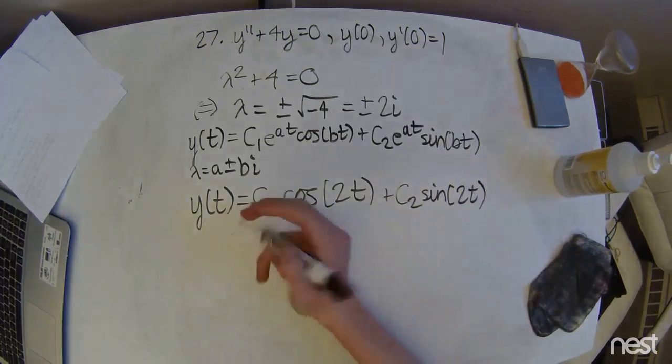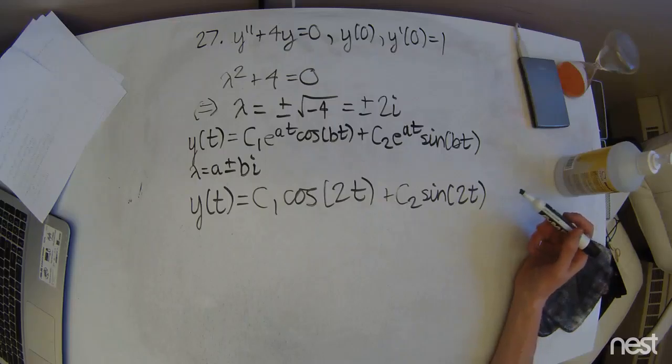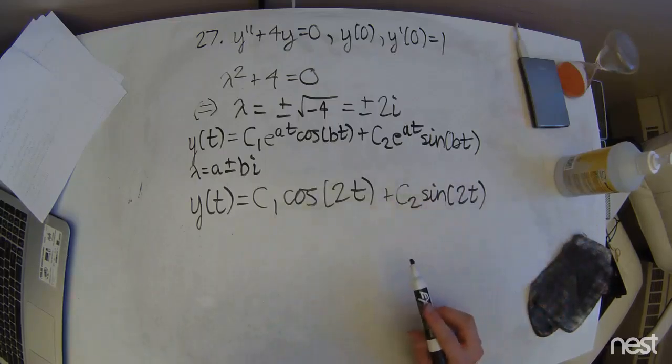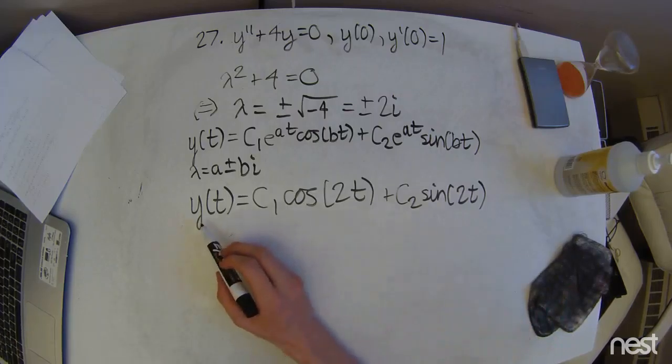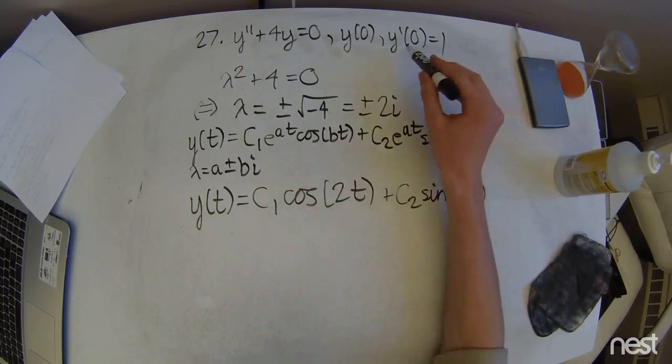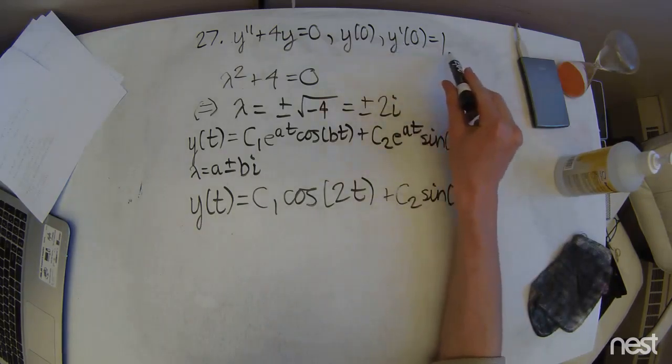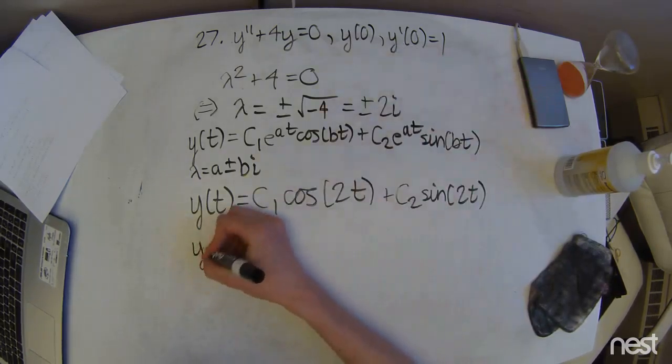All right. So now we're going to start solving for those integrating constants. So to do that, we first have to take a derivative of this with respect to t so that we can actually plug in this initial condition.